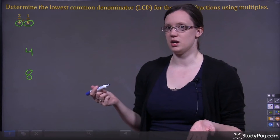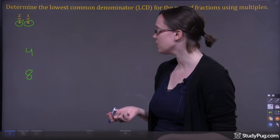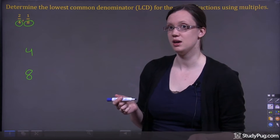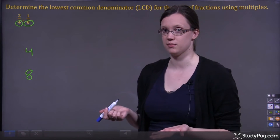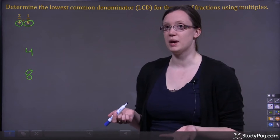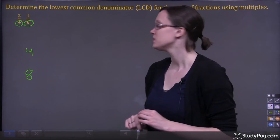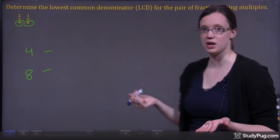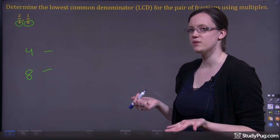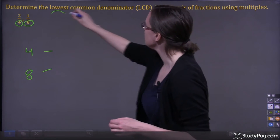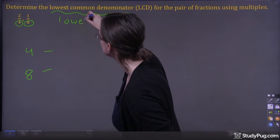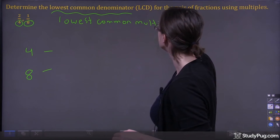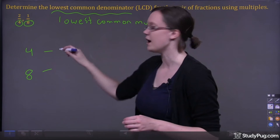What does the lowest common denominator mean? Well, a common denominator — common means the same. So we're looking for a multiple of 4 and 8, and we're looking for the lowest multiple of 4 and 8. This multiple must be the same for both 4 and 8. We can see we're using multiples to find the lowest common denominator. Another way of saying lowest common denominator is lowest common multiple. So we're looking for the lowest common multiple of 4 and 8.